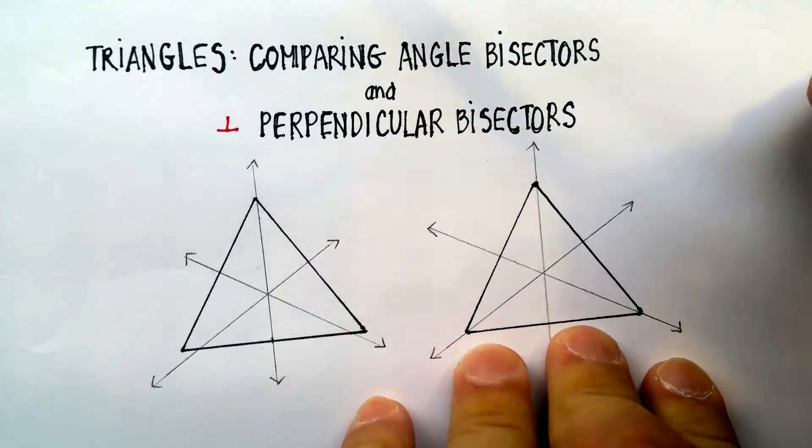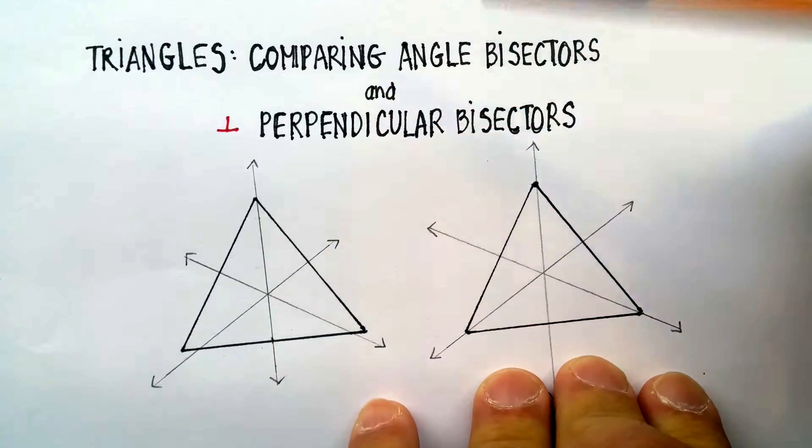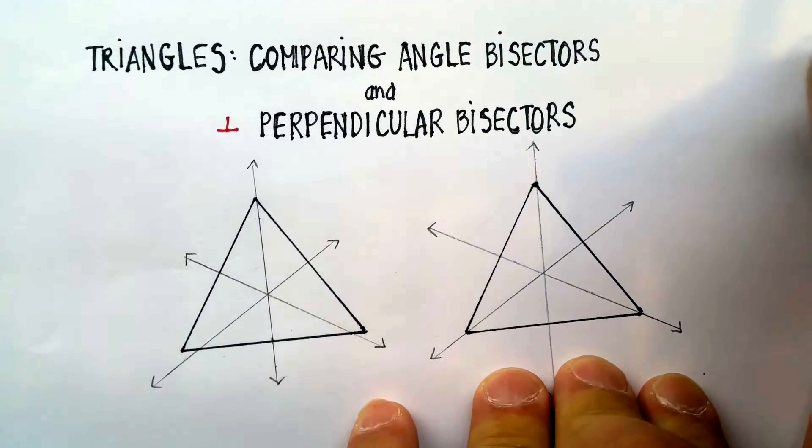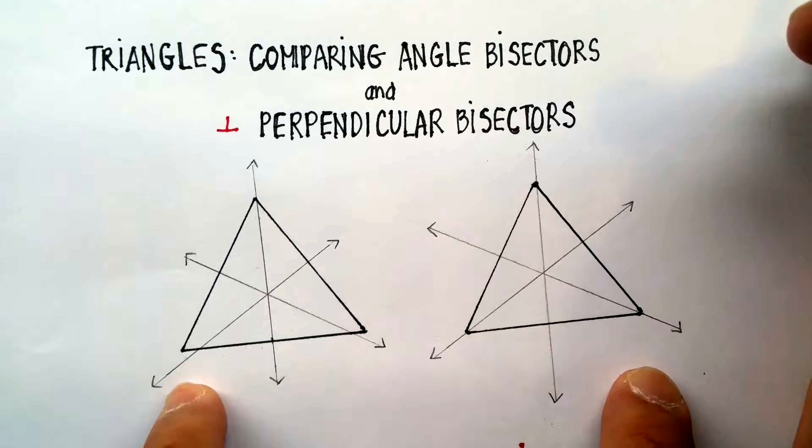Okay, in this video, we're going to compare angle bisectors and perpendicular bisectors and talk about some of the characteristics that are similar for each, but there are also some distinguishing remarks.